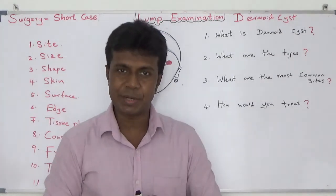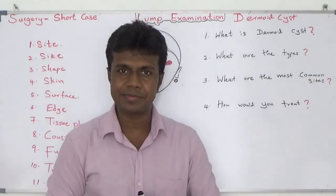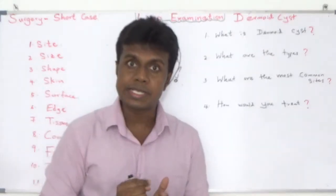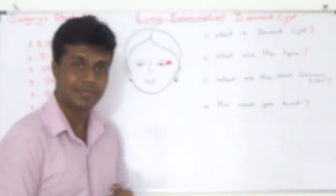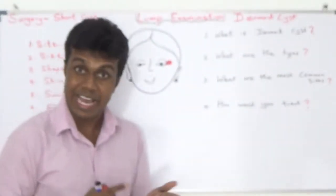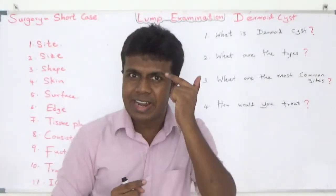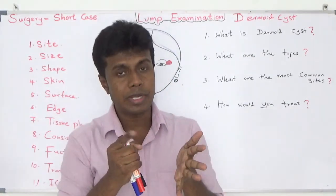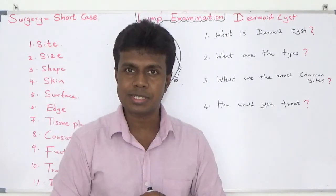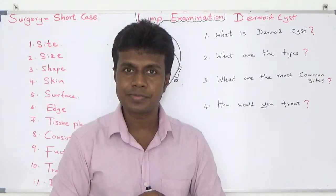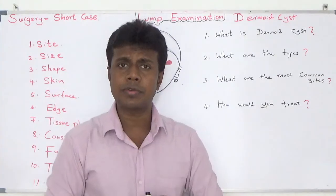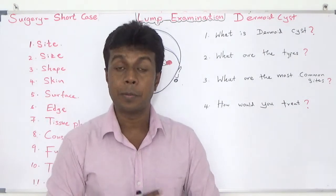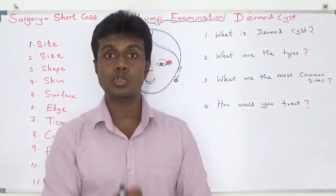In a surgery short case, the examiner will ask you to examine a lump. At first glance, the lateral angle of your eye may suggest it could be a dermoid cyst. The most common site of a dermoid cyst is the midline, which is the most common site.